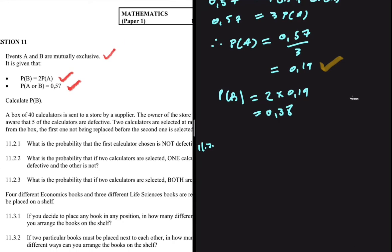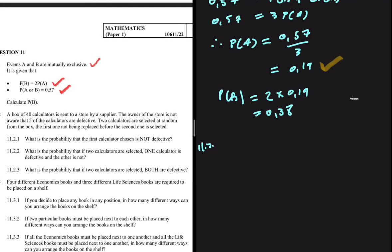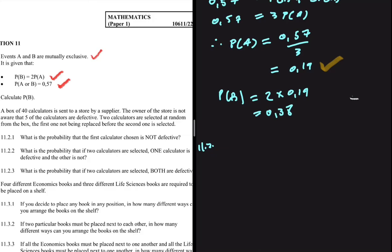Let's look at 11.2. A box of 40 calculators is sent to a store by a supplier. The owner of the store is not aware that 5 of the calculators are defective. Two calculators are selected at random from the box, the first one not being replaced before the second one is selected. For 11.2.1: what is the probability that the first calculator chosen is not defective? We have 40 calculators total, and 35 are not defective because only 5 are defective.